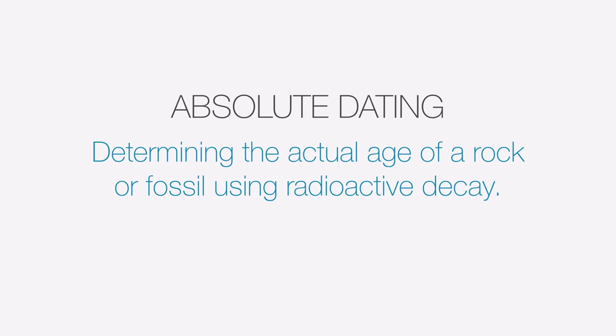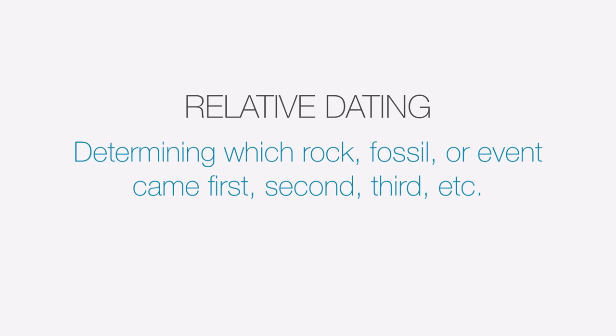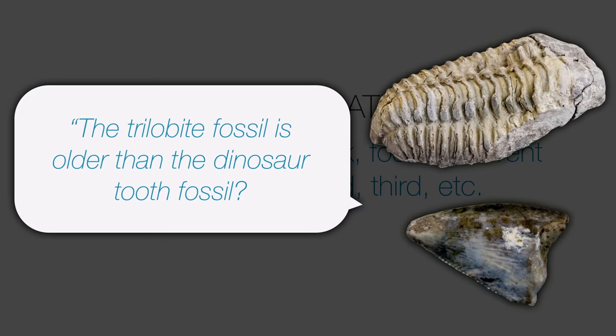There's another type of dating that we use when we're looking at the history of the Earth, and that's called relative dating. This would be figuring out simply which rock or fossil or geologic event came first, which one came second, third, etc., without using any specific quantitative values. For example, if I were to say the trilobite fossil is older than the dinosaur tooth fossil, that would be an example of relative dating because I'm not using any numbers, I'm doing a comparison.